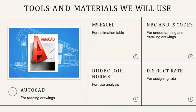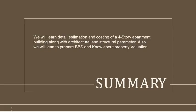We will discuss the tools and materials in AutoCAD and Excel. We will have AutoCAD and Excel installed. We will also provide different codes and references such as IS codes and basic rates. We will provide sample materials. As an overall summary, we will use a full 4-story apartment for complete estimation and costing. You will be provided with architectural drawings, and you can find the bar bending schedule as well.